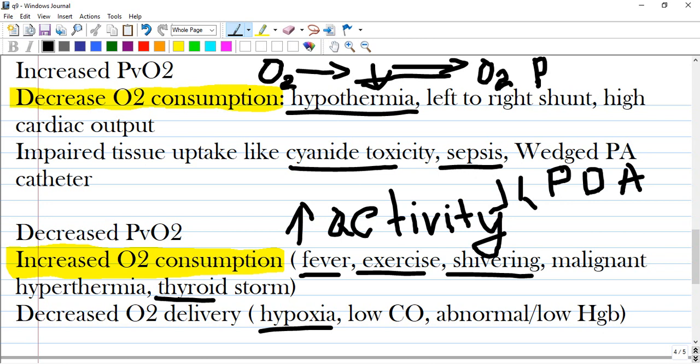Many causes of hypothermia in which all the processes are frozen or decreased, left to right shunt where oxygenated blood is going back to the pulmonary circulation and will achieve new oxygen to the present. And of course, pressure of oxygen will be high and high cardiac output. Also, impaired tissue uptake like cyanide toxicity, sepsis, wedged pulmonary artery, etc.